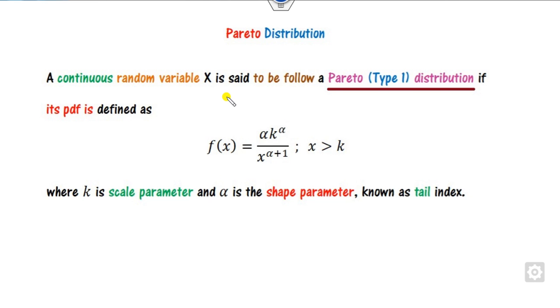So what is the Pareto distribution? Any continuous random variable X is said to follow a Pareto Type 1 distribution if its pdf is defined like this. You can see this alpha k raised to power alpha is a constant. So basically this is the inverse of the power law. Where k is the scale parameter and alpha is called the shape parameter, also known as the tail index.